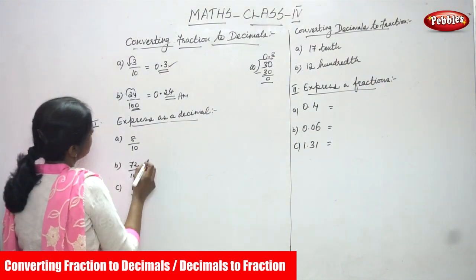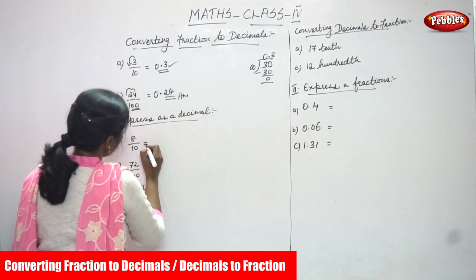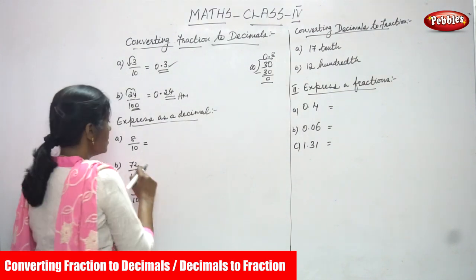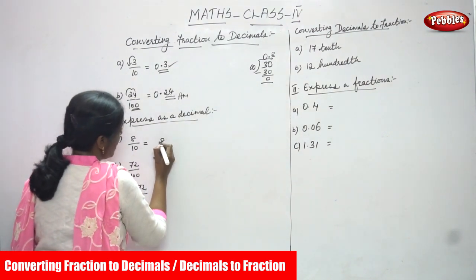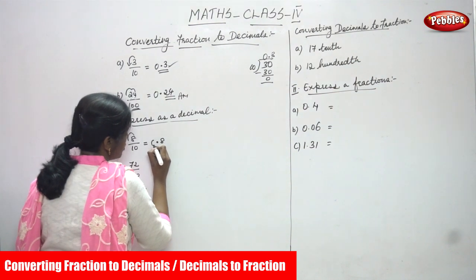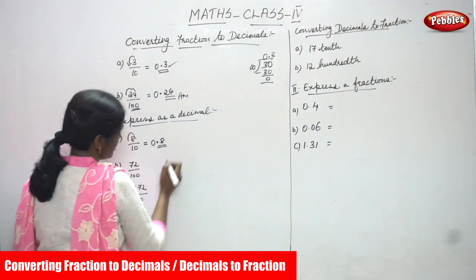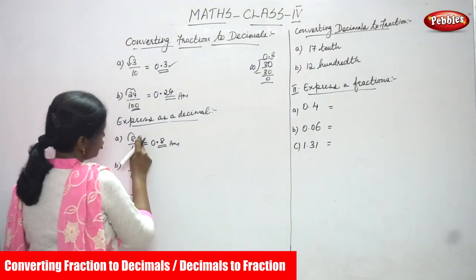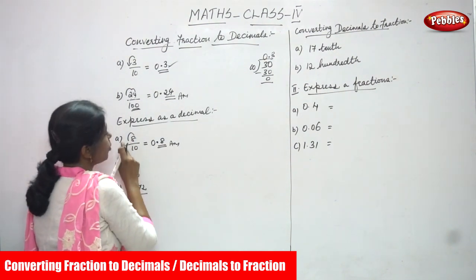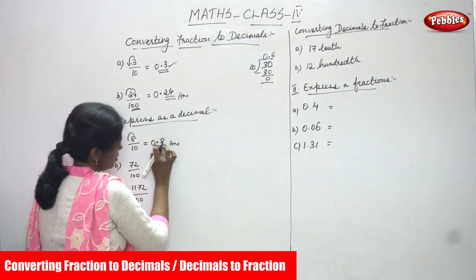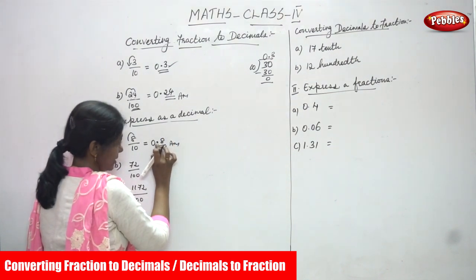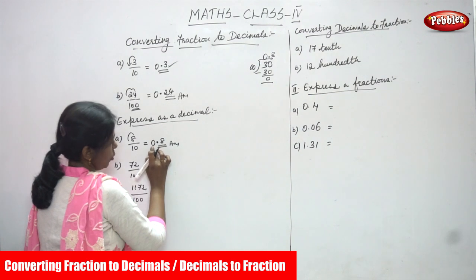Now express as a decimal. For 8 by 10, 8 is the numerator and 10 is the denominator. How many zeros in 10? Only one zero. So you have to move only one digit to the left. Write 8, put a point after it, then add 0 in front of the point. The answer is 0.8.